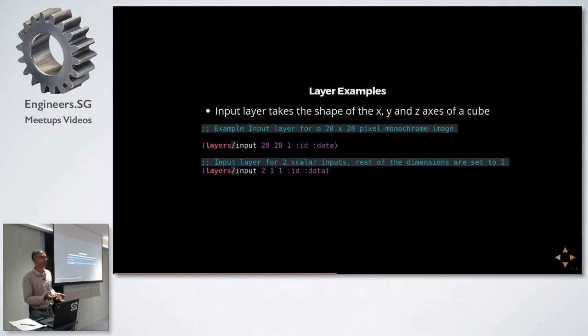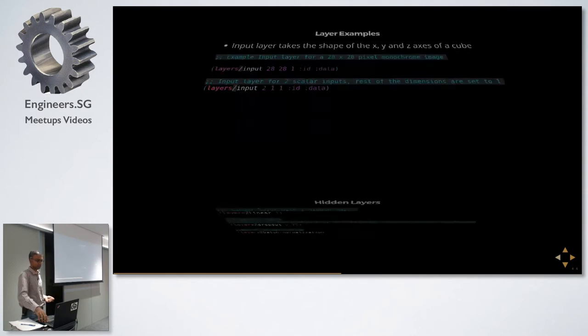Now if you don't have image data like me, and you have, assuming you have two inputs, then you just give two inputs as the first argument and one as the rest. And id-data is basically saying where it should find the input data when you present with a map.